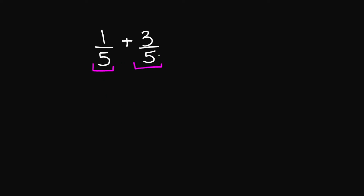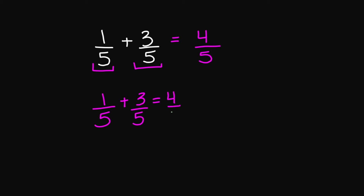Let's look at this example: 1 over 5 plus 3 over 5. Since my denominators are the same — they both are 5 — I can go ahead and add my numerators. 1 plus 3 is going to give me 4, and my denominator stays the same, so that's going to be 5. A common mistake is to add both numerators and denominators to get 4 over 10. This is not the answer. You do not add your denominators.